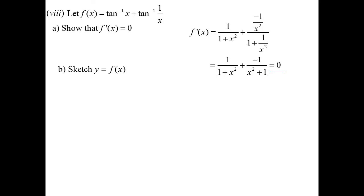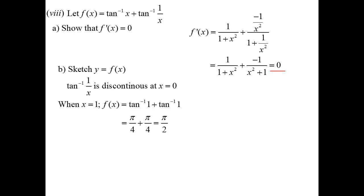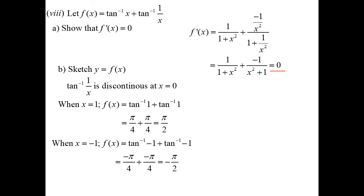Now let me jump to sketching it. The thing about inverse tan of 1/x is that it's going to be discontinuous at x equals 0. Other than that, it's defined for all real x. Since you've got a discontinuity, you have to check either side of it. When x equals 1, we get π/2. But when you substitute negative 1, you actually get minus π/2. So it's a constant value, but a different constant for negatives than for positives. On the right-hand side we've got the horizontal line at π/2, and on the left-hand side at minus π/2, with point discontinuities on the axis itself.